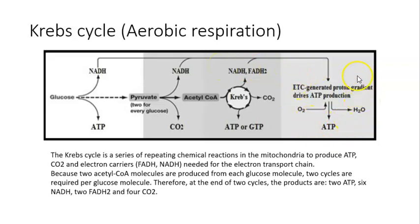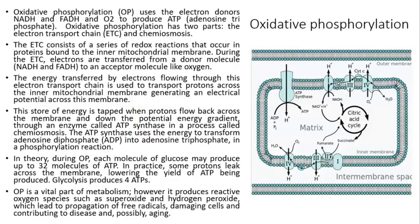Oxidative phosphorylation uses the electron donors NADH and FADH2 and oxygen to produce ATP. It has two parts: the electron transport chain and chemiosmosis. The electron transport chain consists of a series of redox reactions in proteins bound to the inner mitochondrial membrane, where electrons are transferred from NADH and FADH2 to an acceptor molecule like oxygen, forming water.